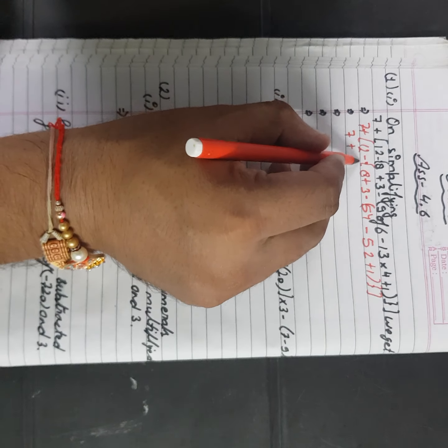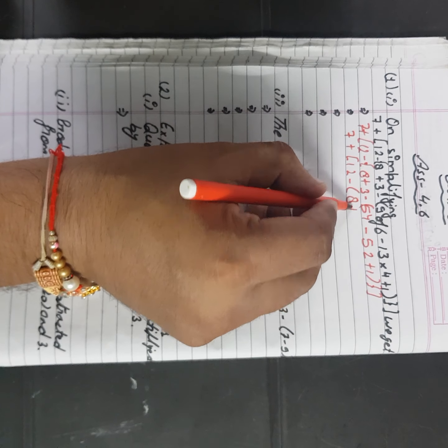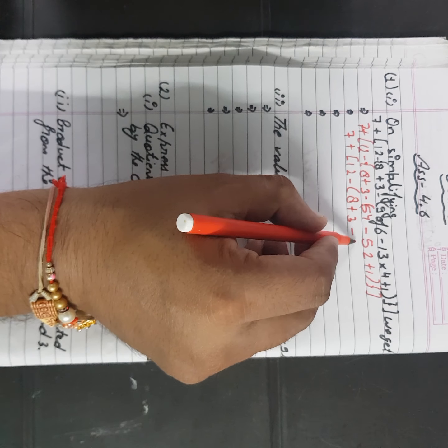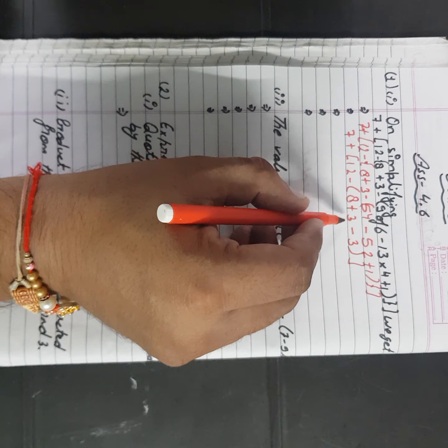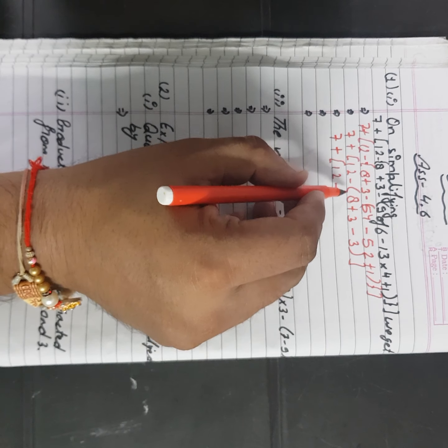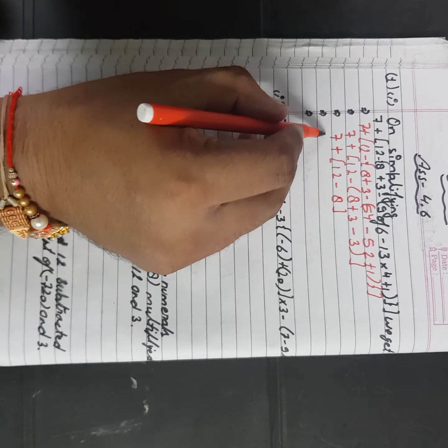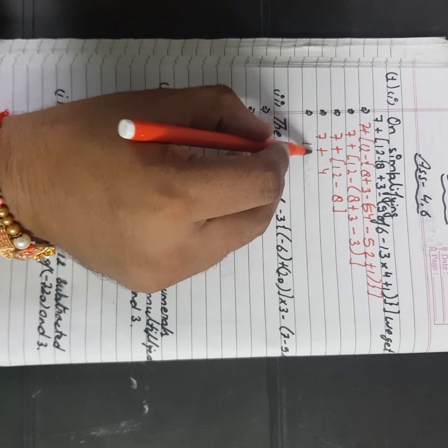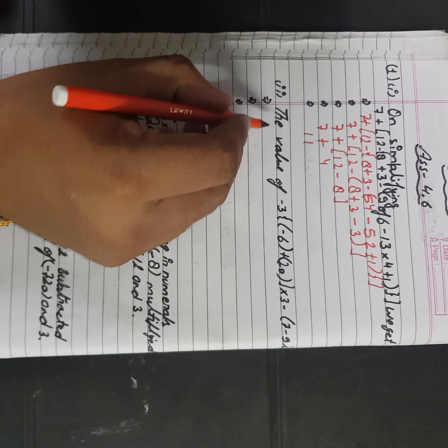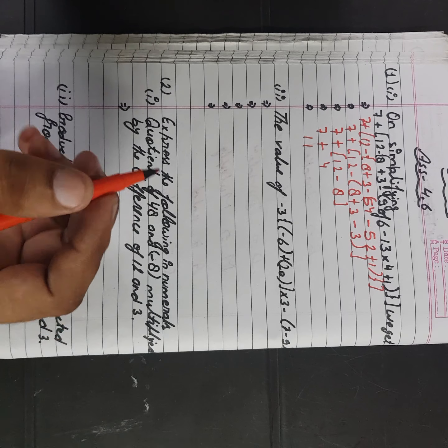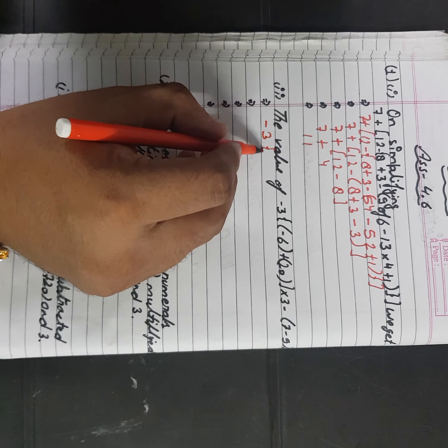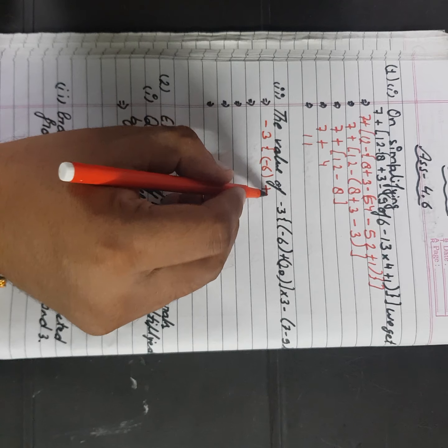Plus, open it right here plus. 8 plus 3, 11. 11 me se 3 jayga, kitna bachega? 8 bachega. 7 plus 12 minus 8, 4. 11, 4 ho jayga. 11 thik hai, isko same.